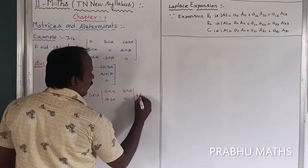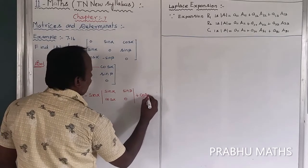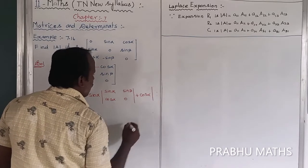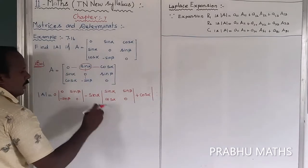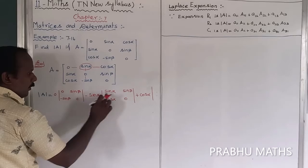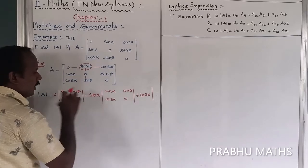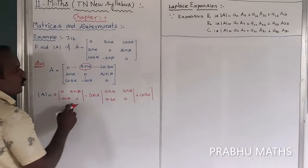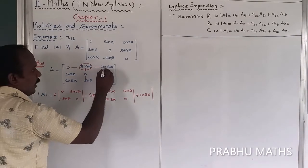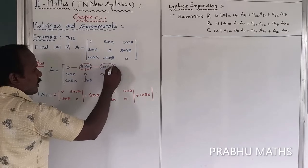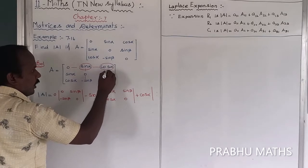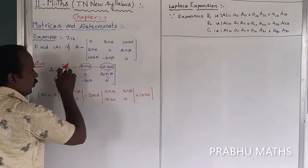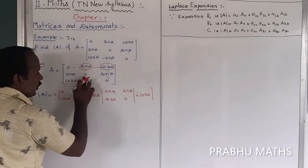The last term is plus cos α, into the determinant of its minor. The entire row and column of cos α are closed off, and the remaining 2x2 submatrix is the minor of cos α.